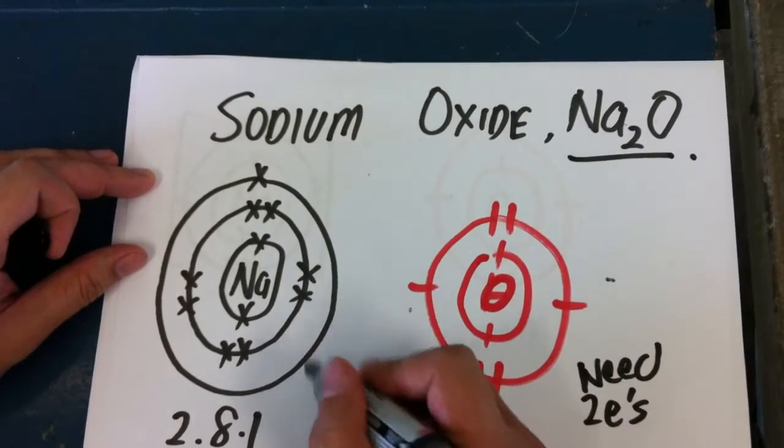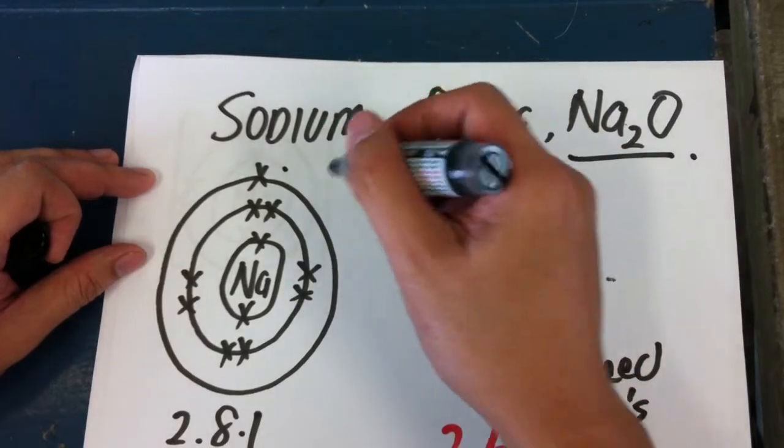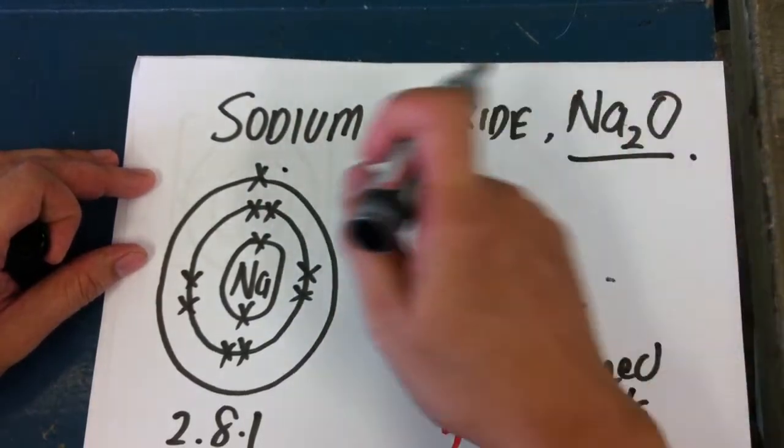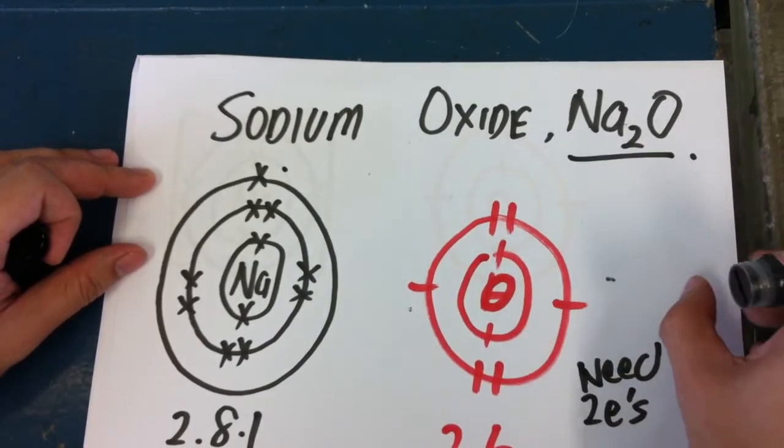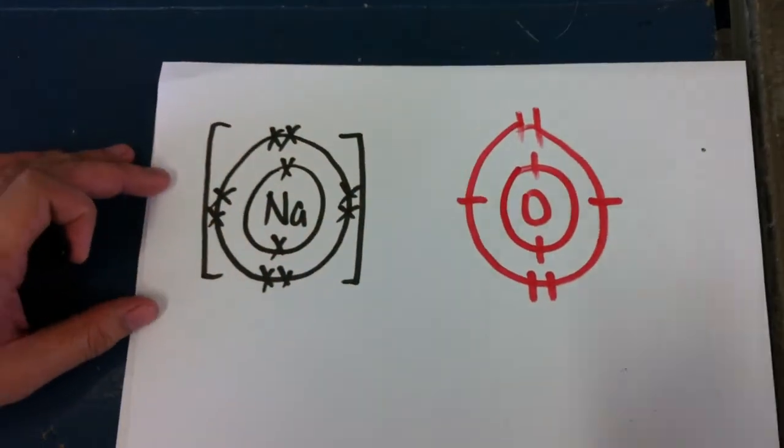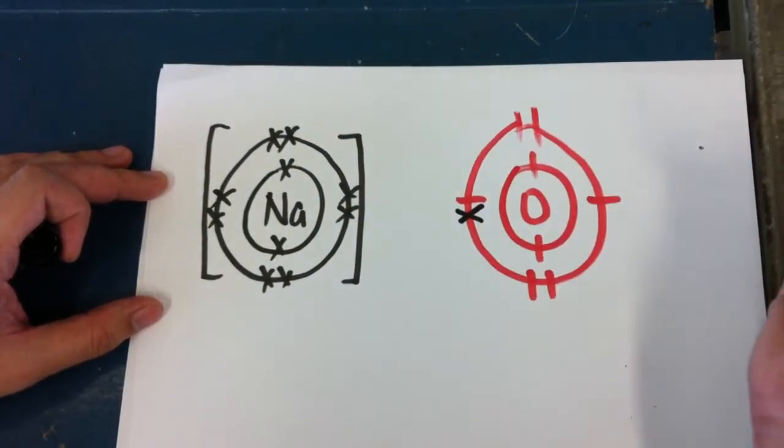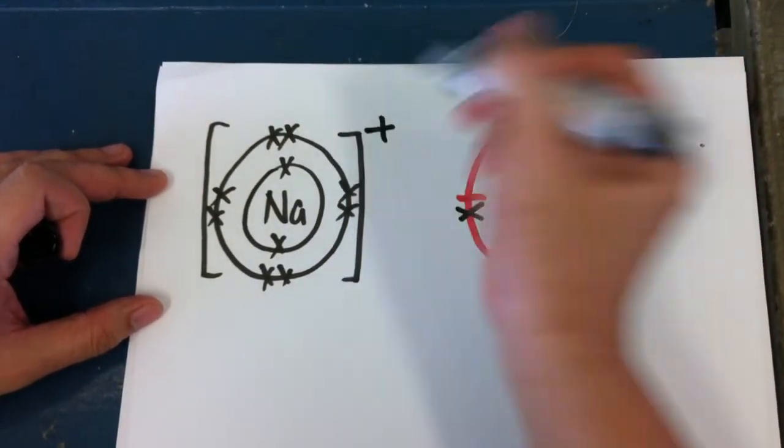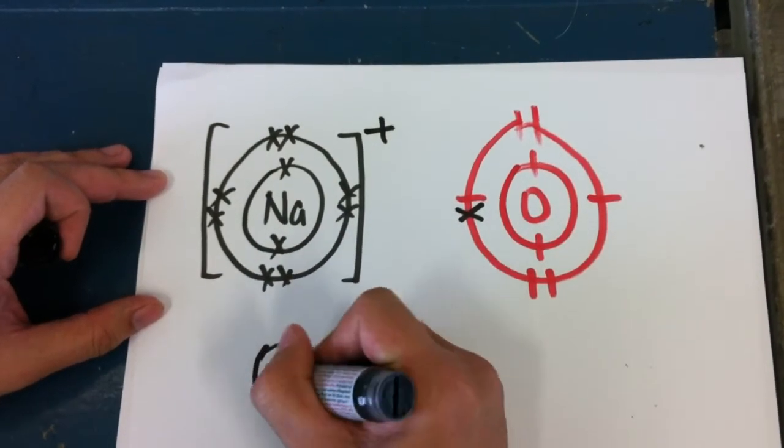Sodium needs to give away one electron. Now how are you going to solve that? The only way to solve that is when you have two sodium atoms giving to one oxygen atom. So this is what's going to happen: sodium gives away and sodium becomes a positive ion. Now you need another sodium, and this sodium gives away its electron and becomes positive.